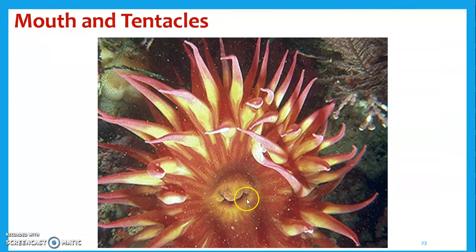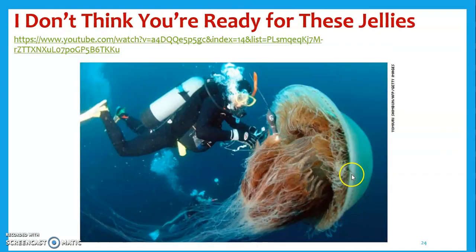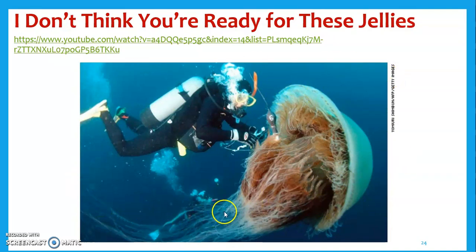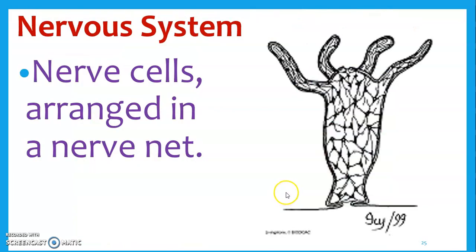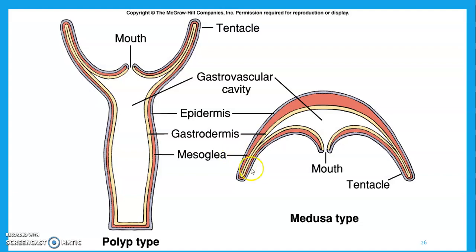Mouth and tentacles — that's actually where the jellyfish feeds. All these stinging tentacles bring in food to the mouth on the inside. It does have a nervous system — pretty basic nerve cells arranged in a nerve net, so you can see the beginning of a nervous system. But no centralized brain — that'll come later.